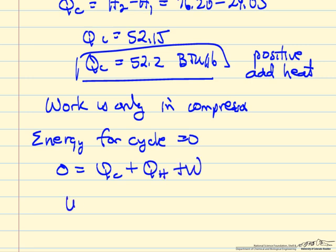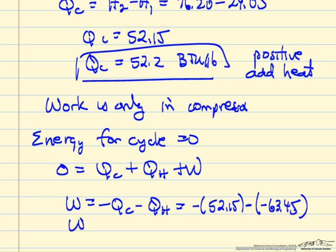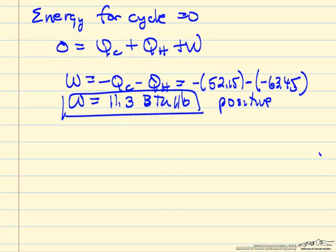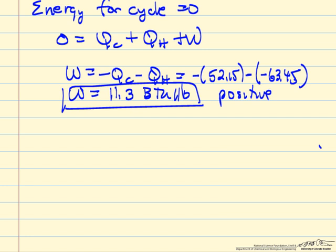All the energy inputs and energy removed must add to zero. There are only three energies that we add or remove. This means the work is minus QC minus QH, which is 52.15 minus QH, and QH is negative. So the work is 11.3 BTUs per pound, and this is positive as we expect since we are adding energy to the system.